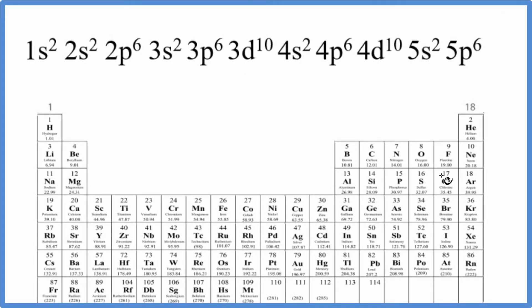There are a few ways we could figure out which element here on the periodic table has the electron configuration here that ends in 5s² 5p⁶.